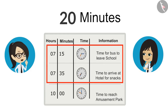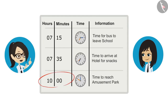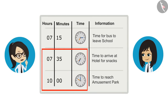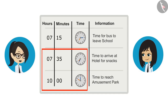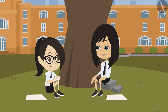This was really very easy! Now we know that we have to reach the amusement park at 10 o'clock. If we also know how long it takes to go from the hotel to the amusement park, then we will be able to tell at what time we should leave the hotel. Sir has said that it takes 55 minutes from the hotel to reach the amusement park.